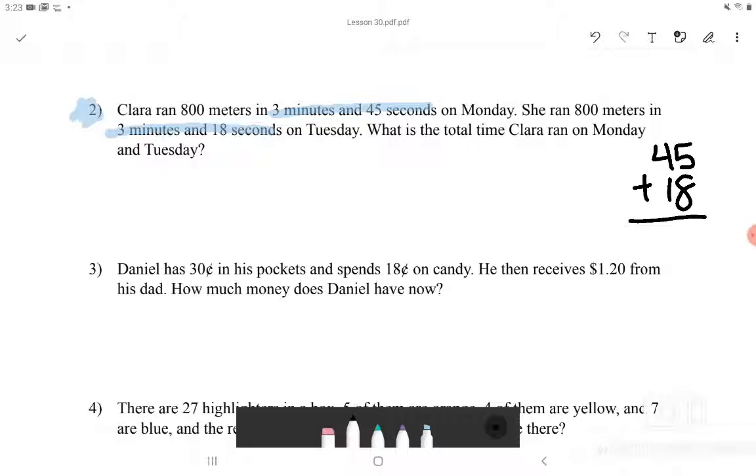5 plus 8 is 13, so I will put 1 up here and 3 down here. And then we would have to do 1 plus 4 plus 1, which is 6. So we have 63 seconds. Now we would have to add the minutes, which is 3 and 3. She ran 3 minutes and 3 minutes. 3 plus 3 is 6. So we know that she ran 6 minutes.